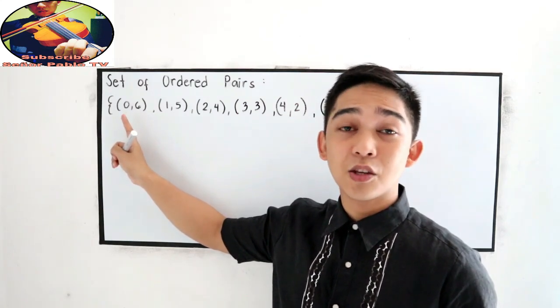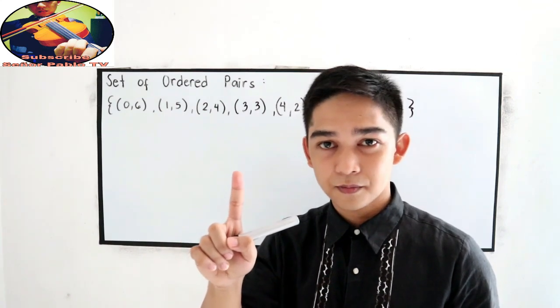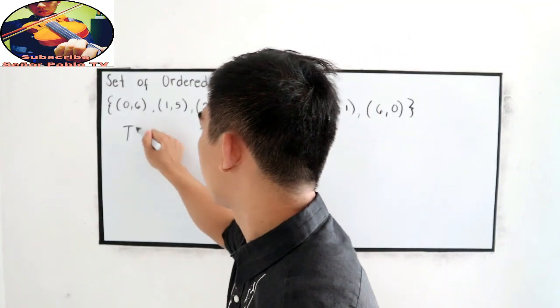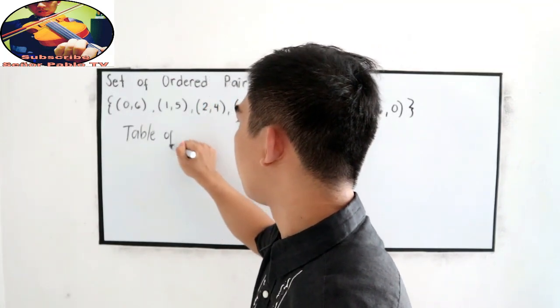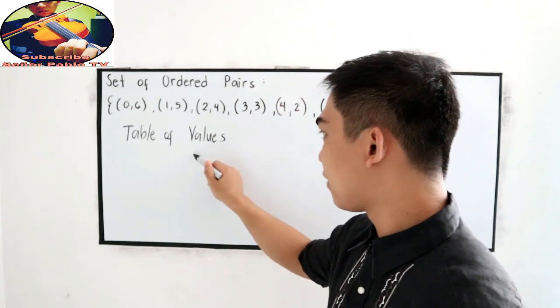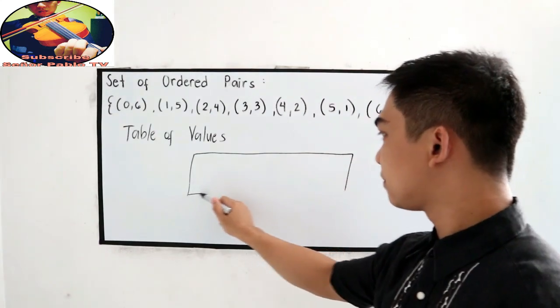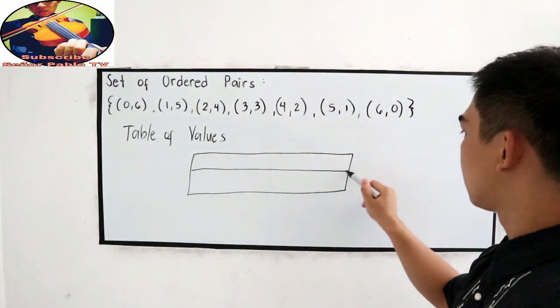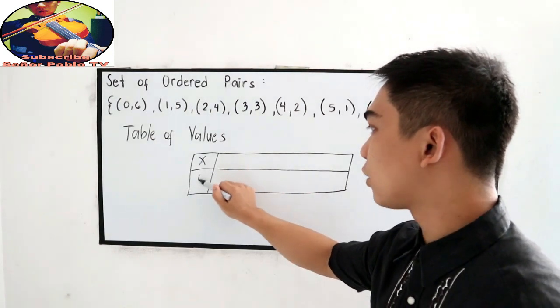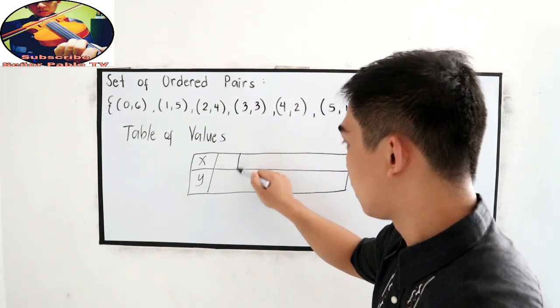Now, let us name it using our first, the table of values. For the table of values, we will create our diagram and we will name it as x and y. We're talking about the abscissa and the ordinate.